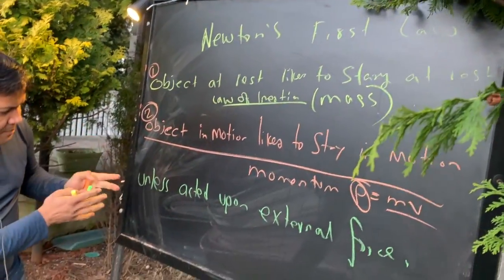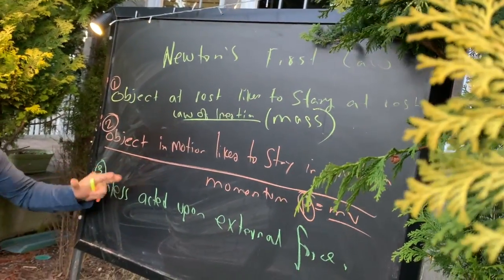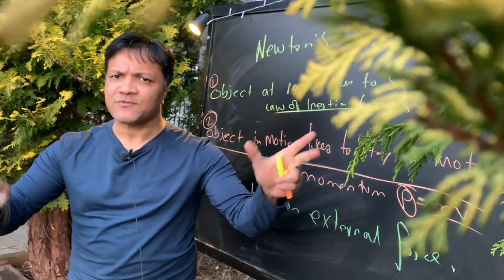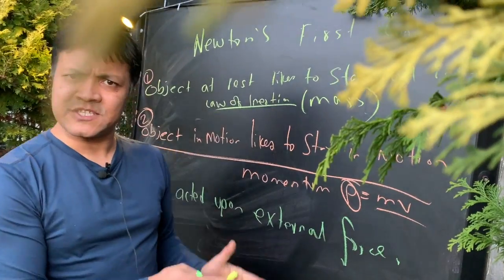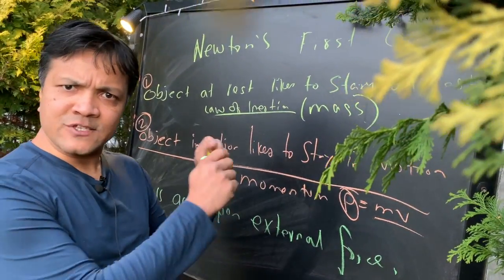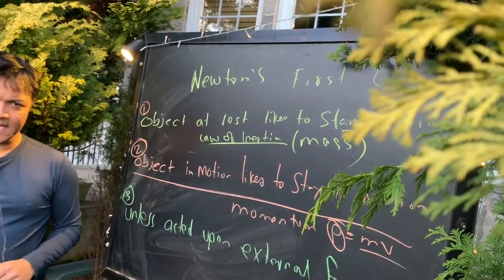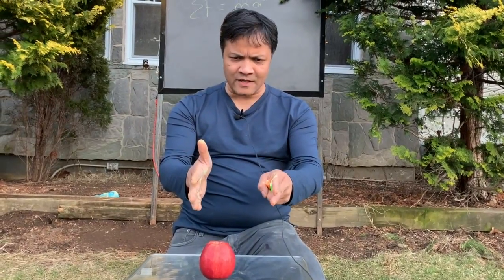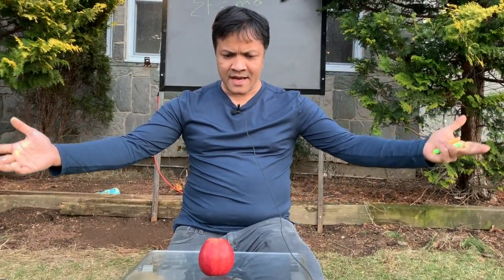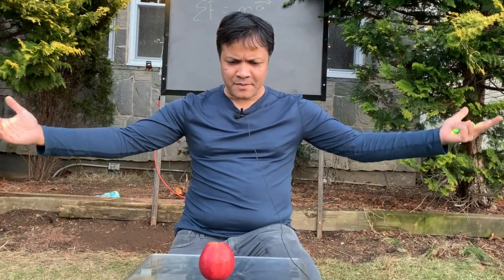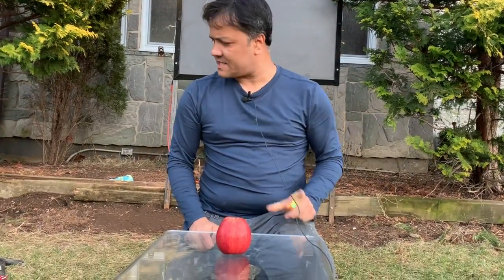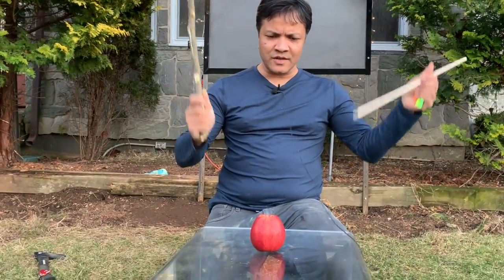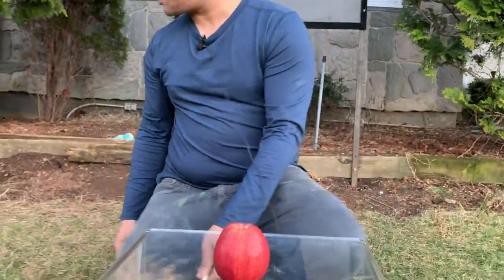The third part is 'unless acted upon by an external force.' An object at rest likes to stay at rest forever — that's inertia. An object in motion likes to stay in motion forever — that's momentum — unless acted upon by an external force. Now, consider this apple: what is its acceleration? Zero. You might think there are no forces acting on it, but I'm going to show you two force vectors acting on this apple.